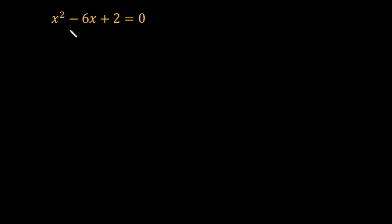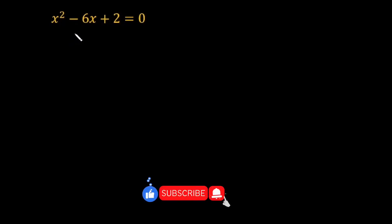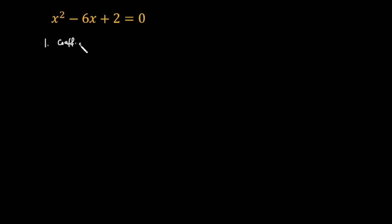Hello friends, in this video I am going to solve a quadratic equation by completing the square. First of all, there are a couple of steps to follow. Step number one: the coefficient of x squared must be equal to one. In this case, the coefficient of x squared is already one, so we don't need to do anything.